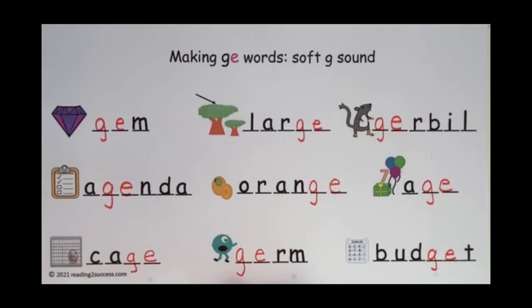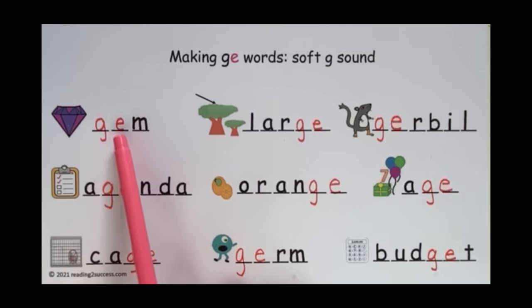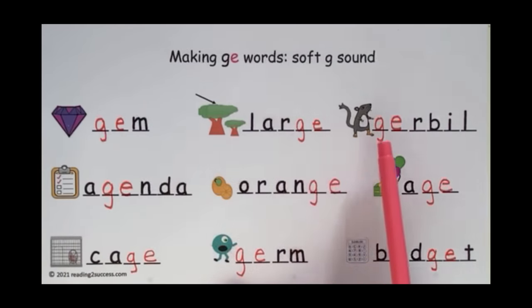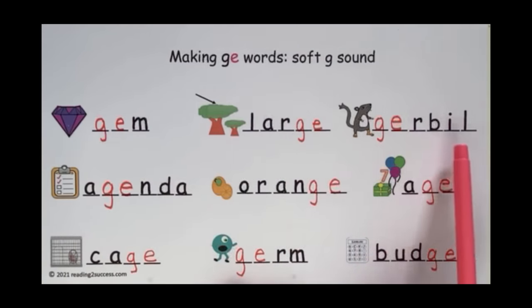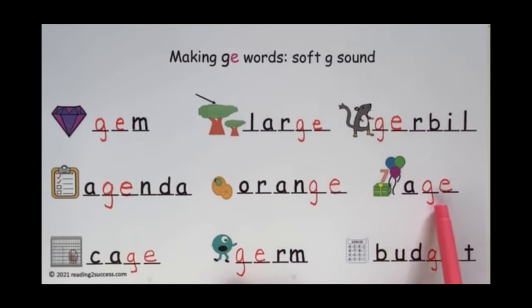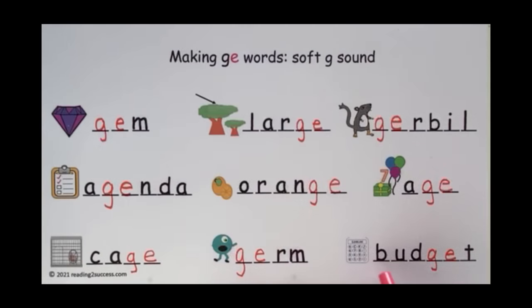So let's go over all our soft G words. Read them with the kids: gem, large, gerbil, agenda, orange, age, cage, germ, and budget.